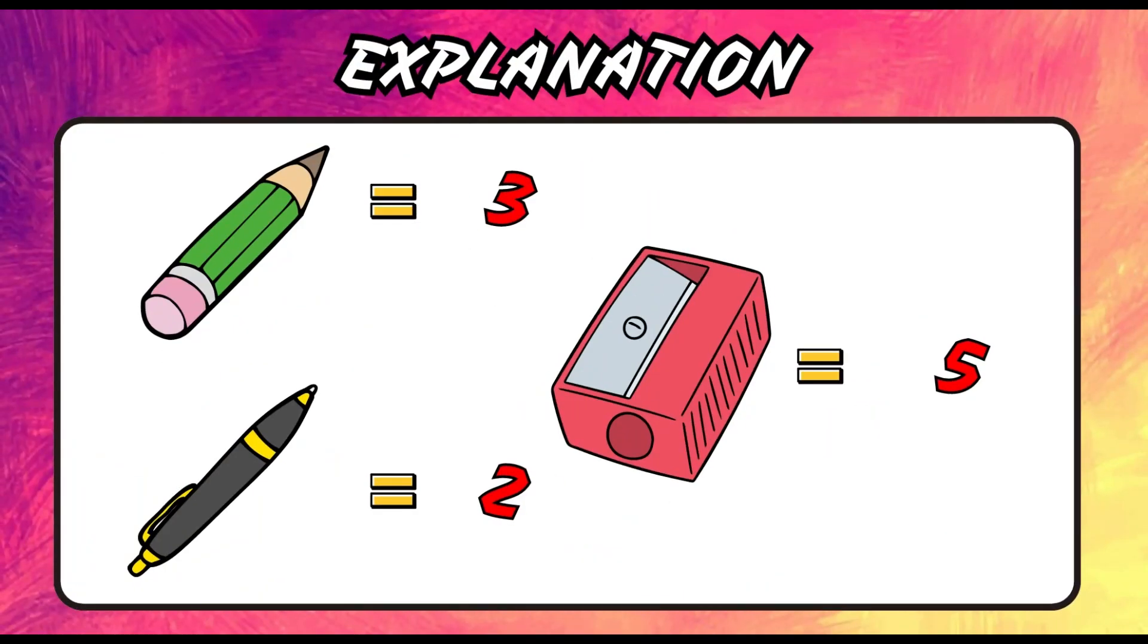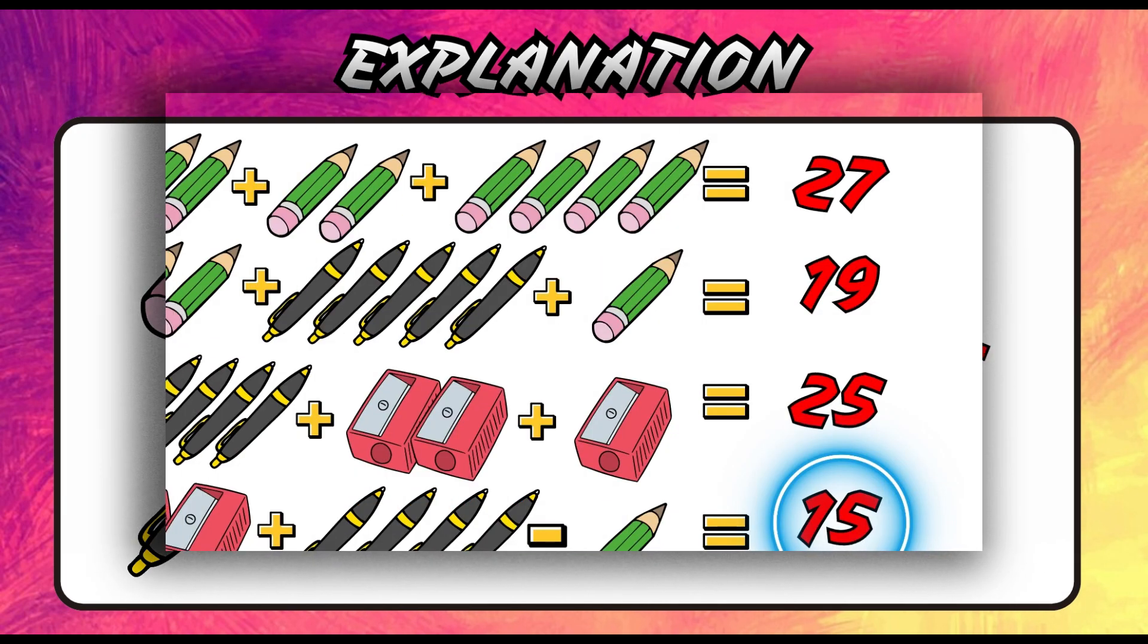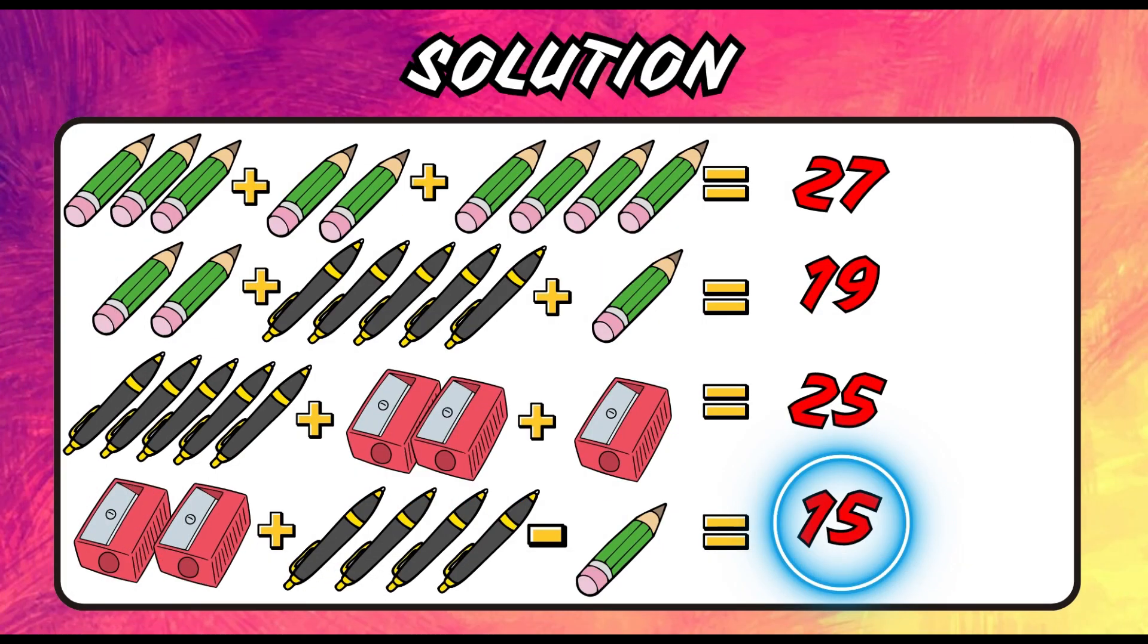Can't solve? Let me explain. The pencil is worth 3, the pen is worth 2, and the sharpener is worth 5. Replace the values with their corresponding quantities. This gives us the equation 10 plus 8 minus 3, hence the right answer is 15.